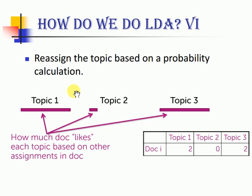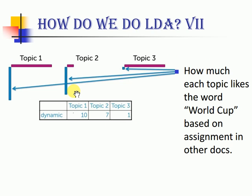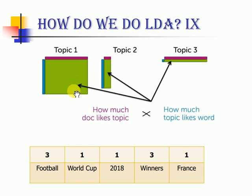Then I make use of two calculations. First, I calculate how much a document likes each topic based on other assignments in the document. In our case, topic 1 in document I comes in two times, topic 2 does not appear right now because I have removed it, and topic 3 comes in two times. Then I calculate how much each topic likes the word World Cup based on assignments in other documents. As you can see, the blue bar — topic 1 — comes in 10 times, topic 2 comes in 7 times, and topic 3 comes in just one time. Next, all we have to do is multiply both values from the previous two steps and find a so-called area between how much the document likes a topic and how much a topic likes a word.